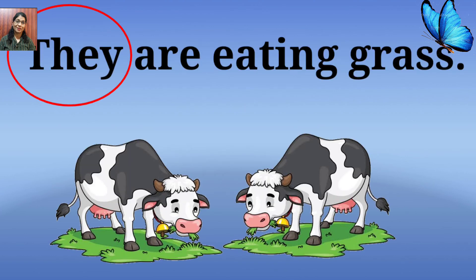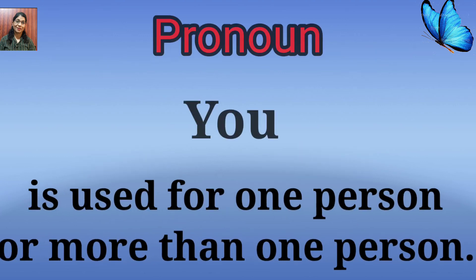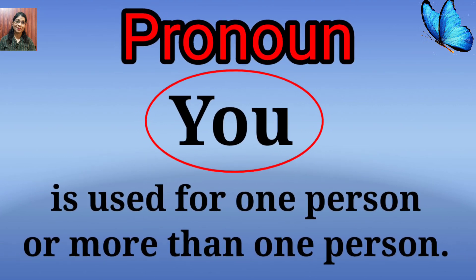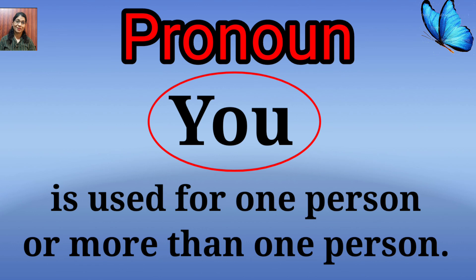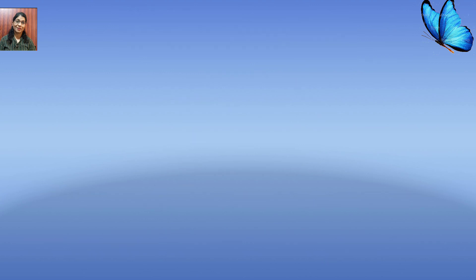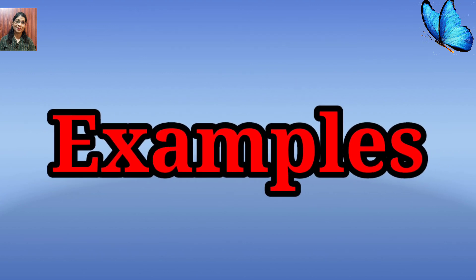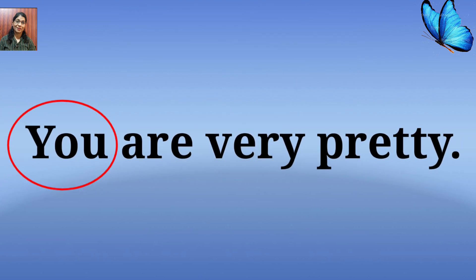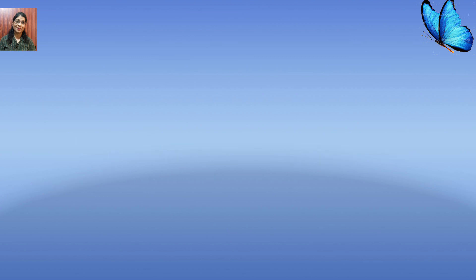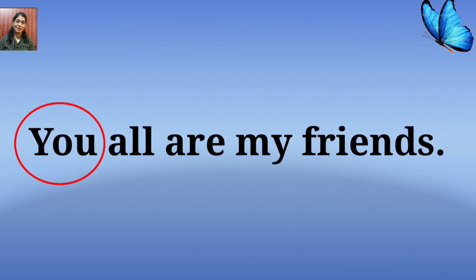They are eating grass. The pronoun 'you' is used for one person or more than one person. Examples are: you are very pretty, you all are my friends.